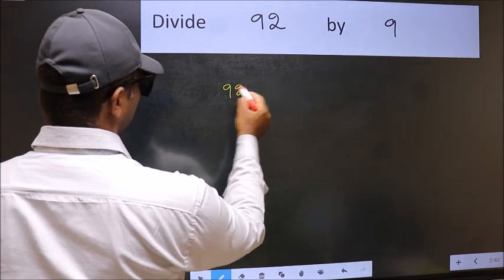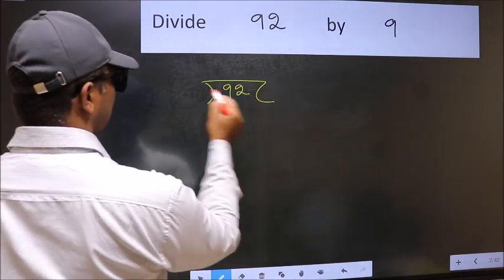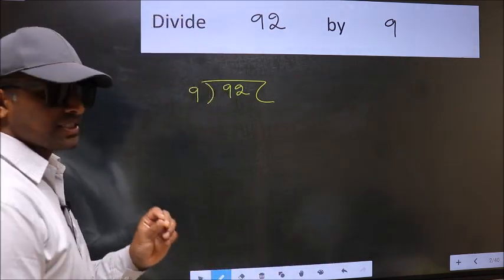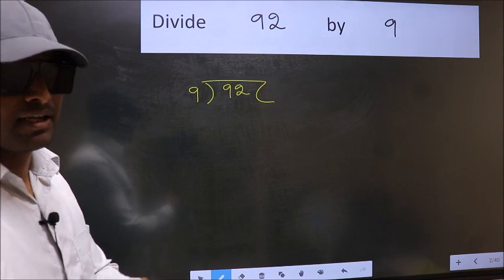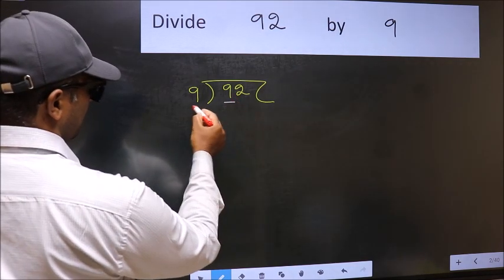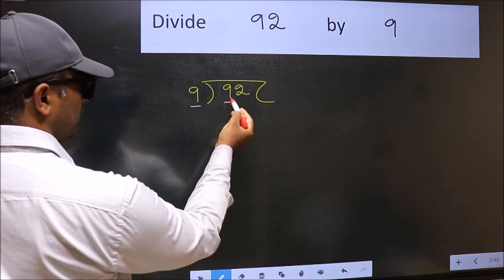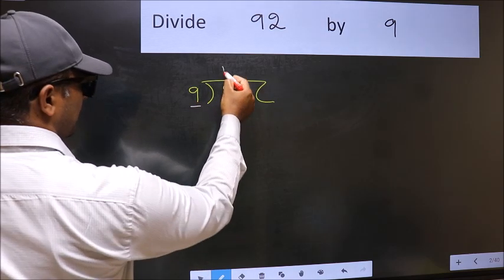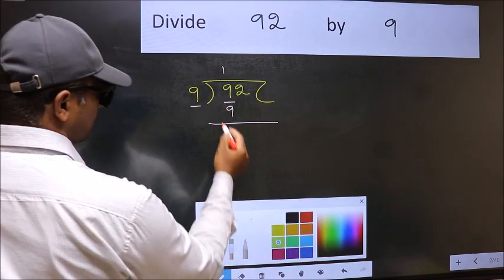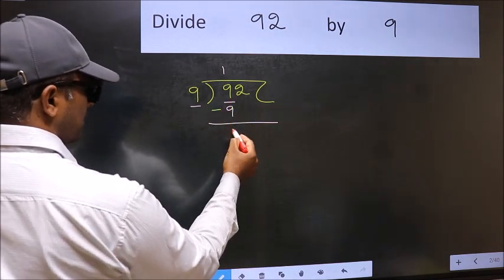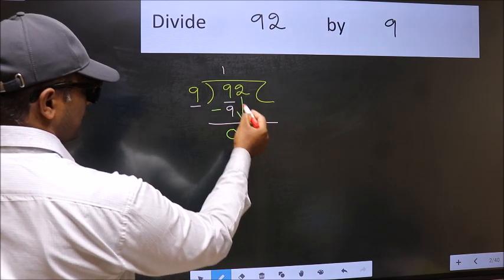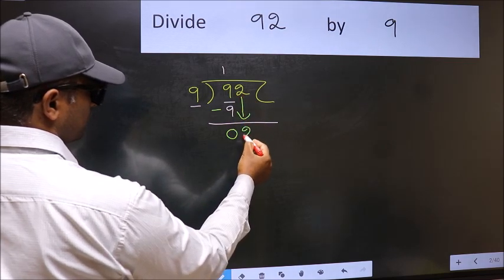92 and 9 here. This is your step 1. Next, here we have 9 and here also 9. When do we get 9 in 9 table? 9 once 9. Now you should subtract. 9 minus 9, 0. After this, bring down the beside number. So 2 down.